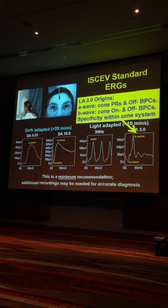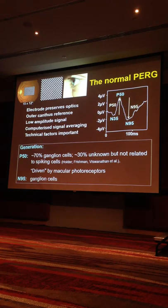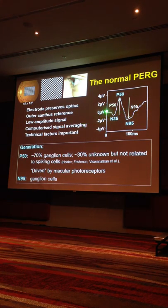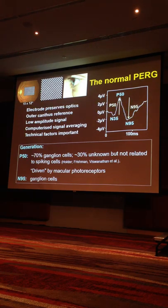The full-field ERG does not test the function of the macula, so we need something else. We can use multifocal ERG, which is a luminance stimulus. Our preferred method is a pattern ERG, where we use a contrast stimulus — a reversing checkerboard where black squares become white and white squares become black. These are small signals: ERGs are hundreds of microvolts, pattern ERGs are less than 20 microvolts. Most of the pattern ERG, around 70% of P50, and all of N95, is generated in the retinal ganglion cells, but P50 is driven by the macular photoreceptors and acts objectively as a measure of macular function.